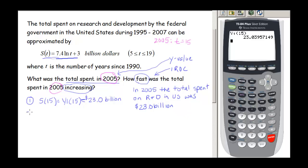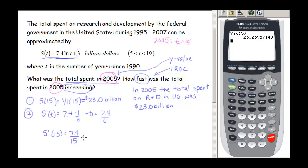For the second question they're asking for an instantaneous rate of change, so we need the derivative. S prime of t: the 7.4 is a constant multiplier, the derivative of natural log is 1 over t, and the derivative of the constant is 0. So S prime of t equals 7.4 over t. Plugging in 15 gives 7.4 over 15, which is approximately 0.5 billion dollars per year.